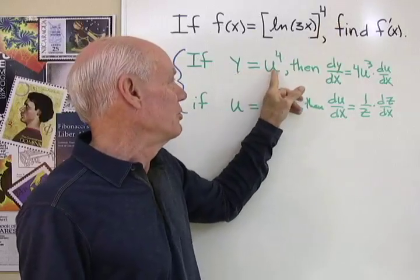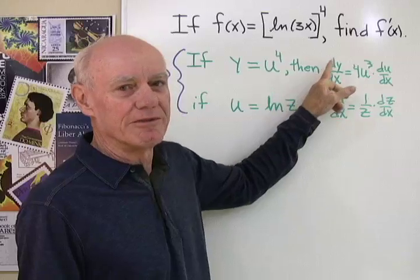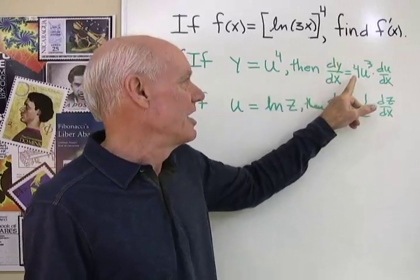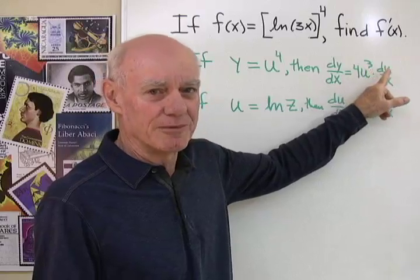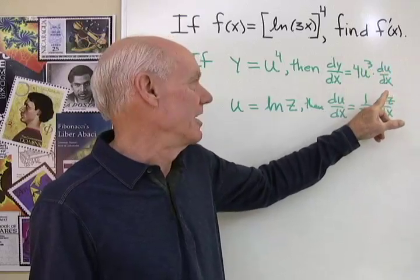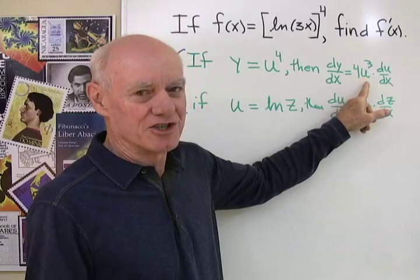I know if y is equal to u to the fourth power, then the derivative of y with respect to x is going to be 4u to the third power times the derivative of u with respect to x. So notice that base doesn't change right there.